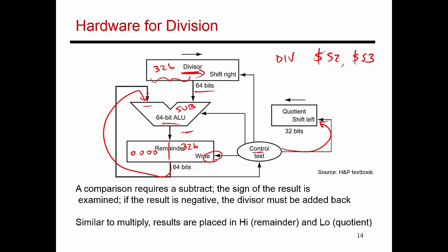So the remainder gets placed in the high register, and the quotient gets placed in the low register. And just as with the multiply case, you have to use move from high and move from low to move these internal register values into one of the MIPS defined registers.